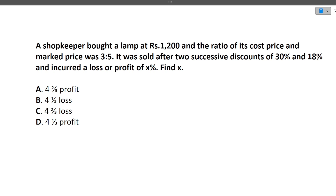It's very simple. When we buy a good, it's the cost price. When we sell a good, it's the selling price. So the ratio of cost price to selling price is 3 to 5, meaning CP divided by SP equals 3 by 5.